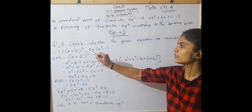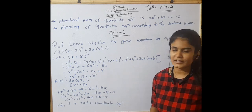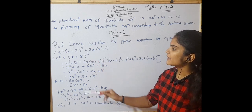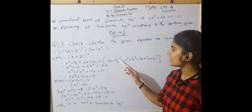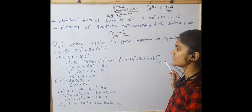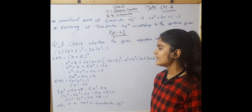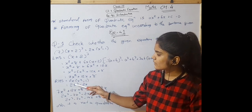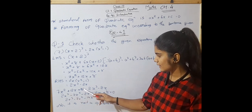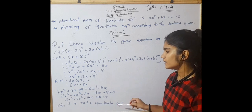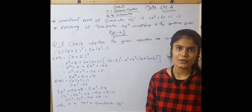Number 7: (X + 2)³ = 2X(X² - 1). First we equate the left-hand side using the identity (A + B)³ = A³ + B³ + 3AB(A + B), giving X³ + 6X² + 12X + 8. The right-hand side: 2X(X² - 1) = 2X³ - 2X. Equating both sides: 2X³ - 7X² - 14X - 8 = 0, which is not a quadratic equation — it is a cubic equation.